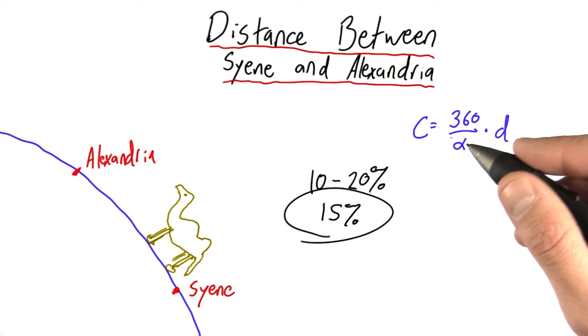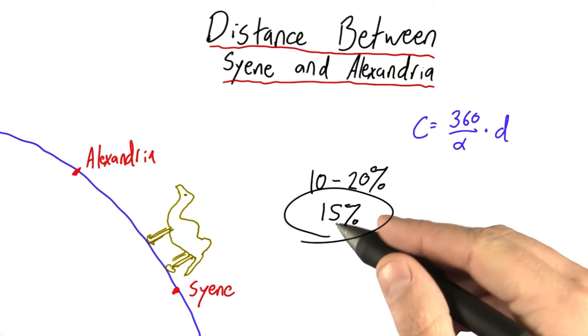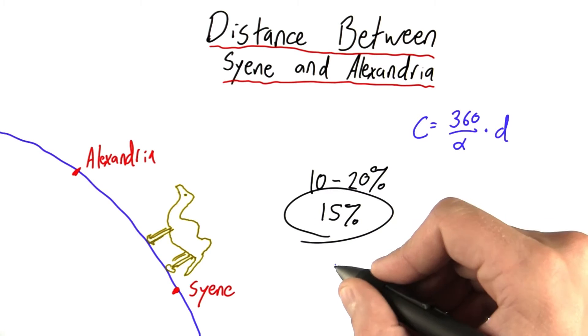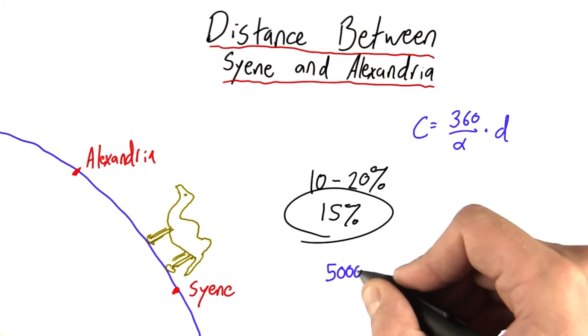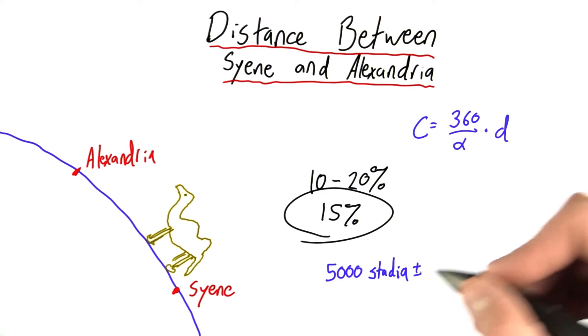The circumference is 360 over alpha times this distance d. And this distance has an uncertainty of 15%, which means that instead of being 5,000 stadia, it's actually 5,000 plus or minus 750 stadia.